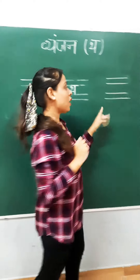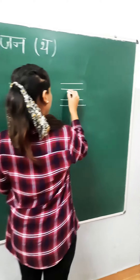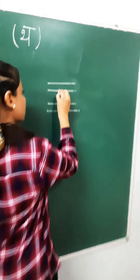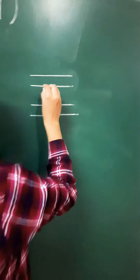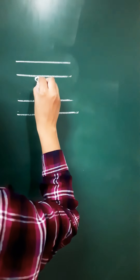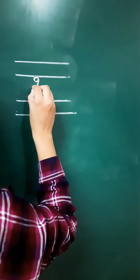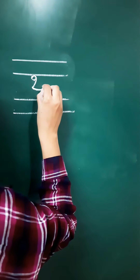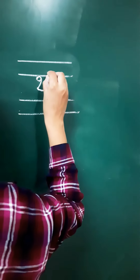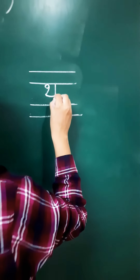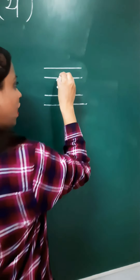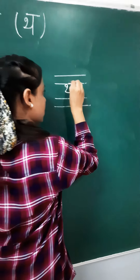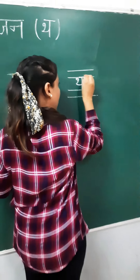One more time I am going to show you. So, small loop, curve, another curve, standing line and the sleeping line.